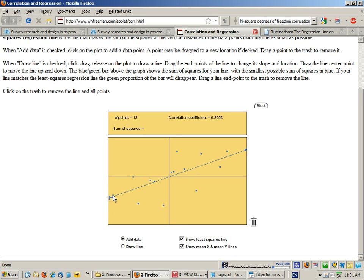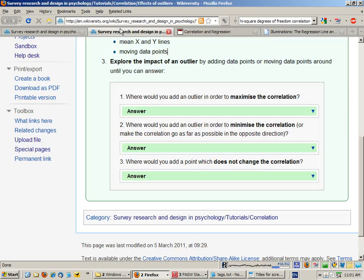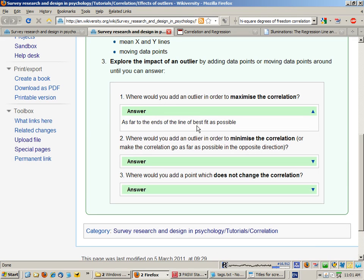So eventually if I add enough points out here or out here, I should be able to get this correlation to be quite strong. It's now 0.9. So the answer here is as far as possible to the ends of the line of best fit.